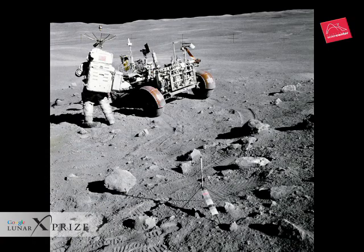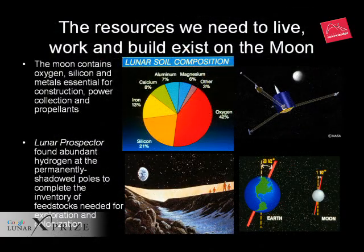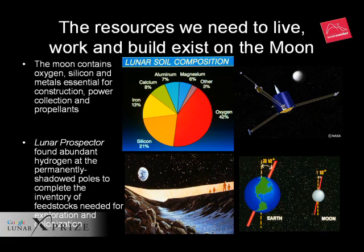We know what most of the moon is made of because we've been there and brought samples back to study. It's a surprise to most people to learn that more than 40% of moon soil is oxygen. There's plenty of silicon to make solar cells to turn sunlight into electricity. Metals like aluminum, iron, and magnesium are abundant. And there are some very interesting herbs and spices present.